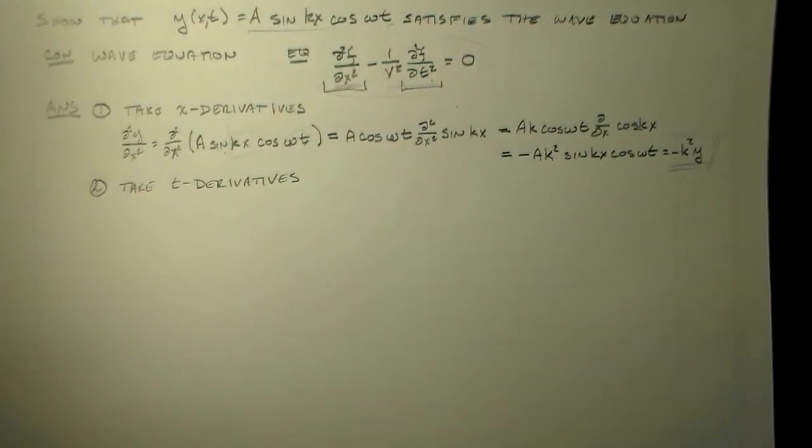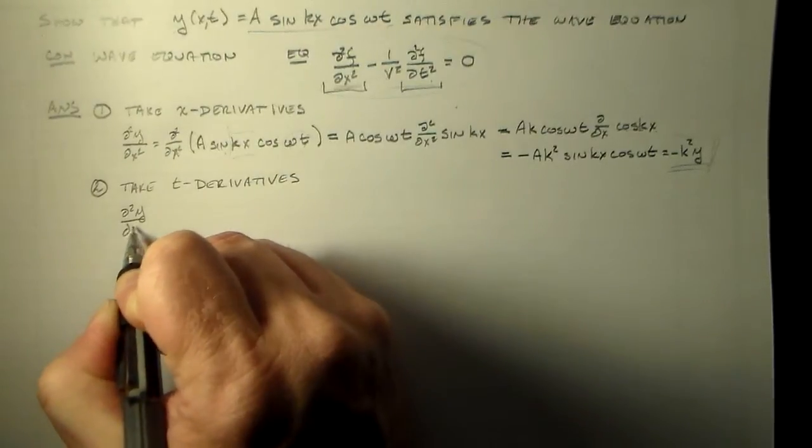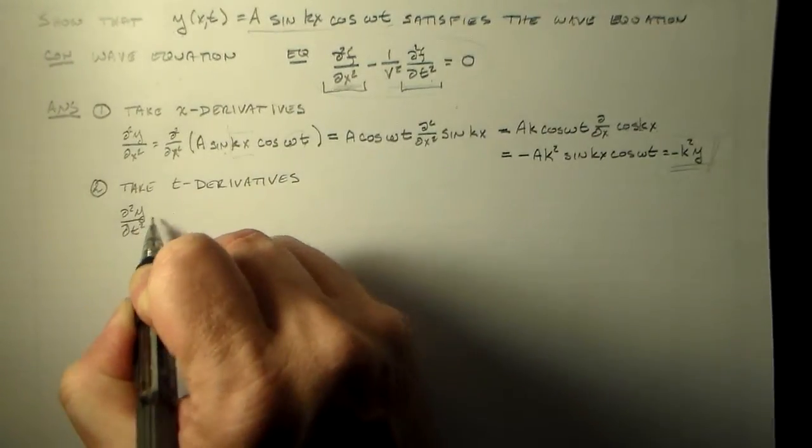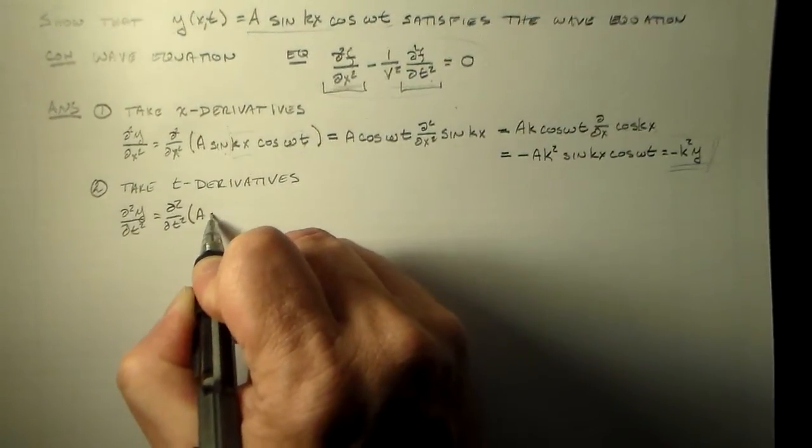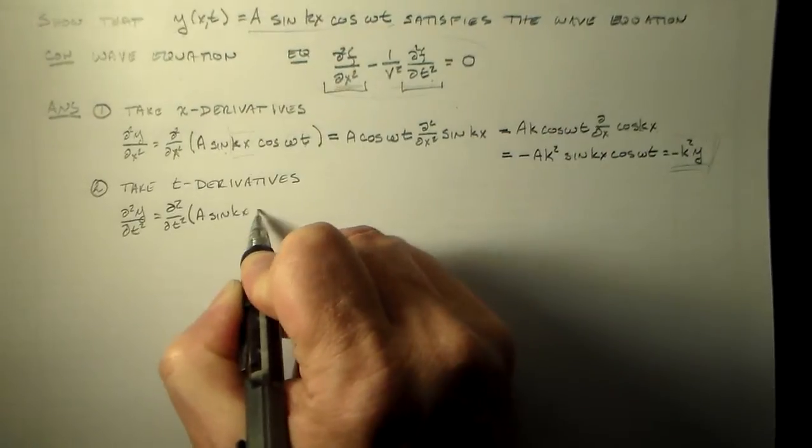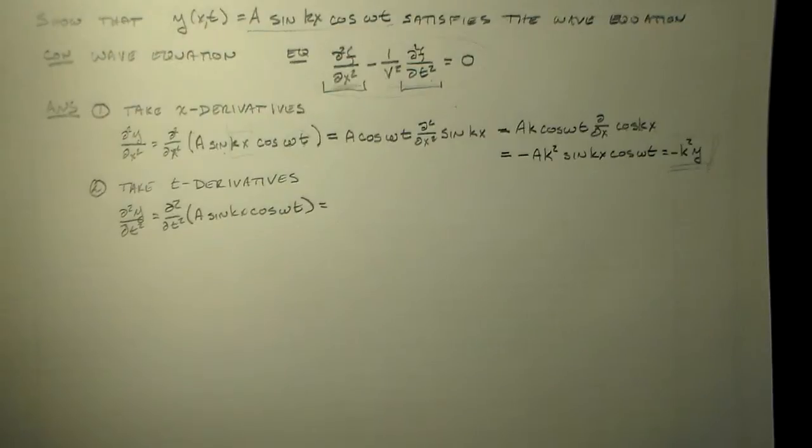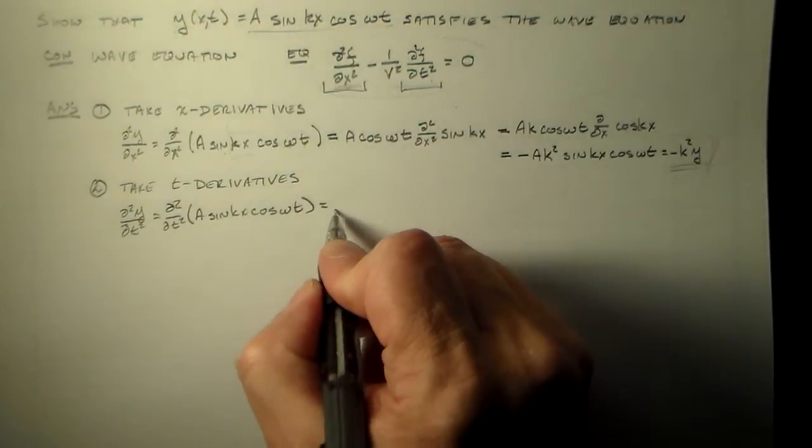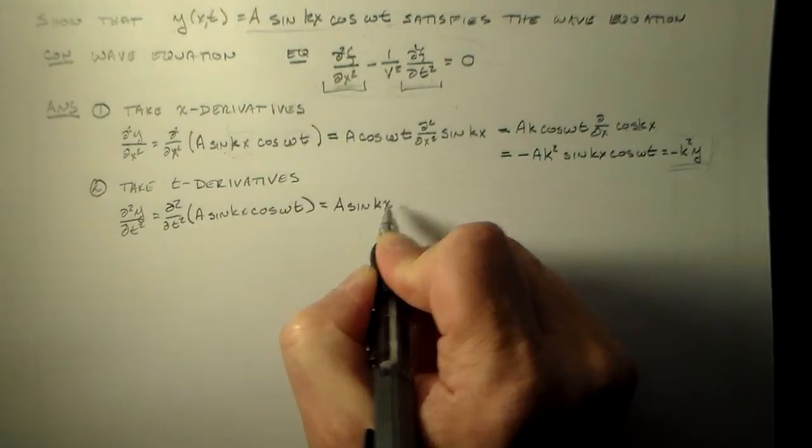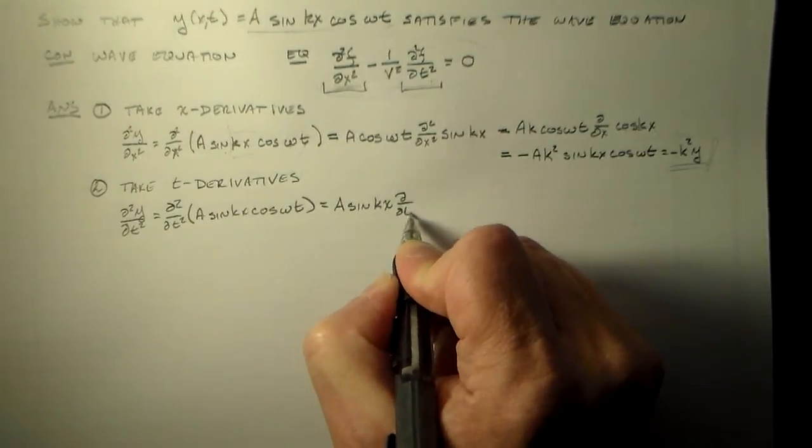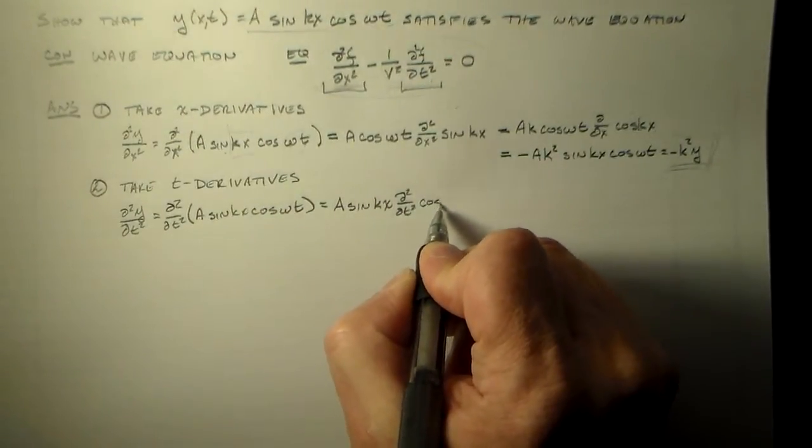So then we want to take the temporal derivatives, right? So that's d squared y dt squared. And we do the same fun thing only with the t's. So a sine kx cosine omega t. A comes out, kx has no temporal dependence. So a sine kx d dt, square that, cosine omega t.